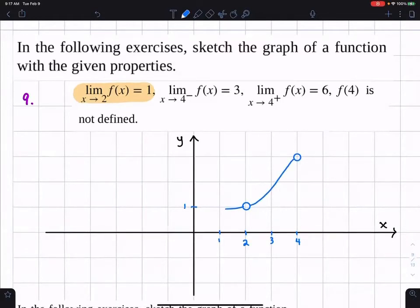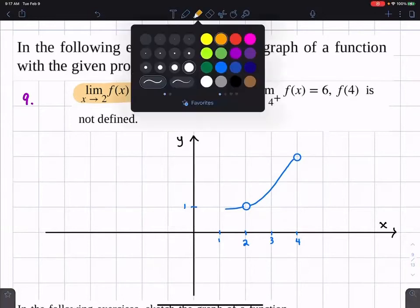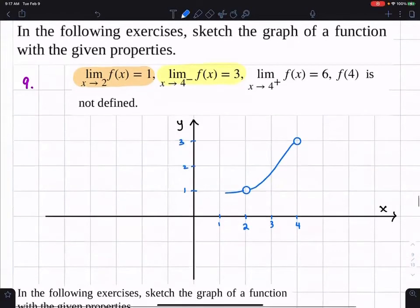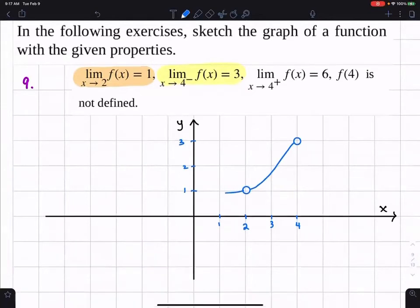And then from the right of 4, all right, so what I did is I just did this one right here. So I've done the first two. And then from the right of 4, the limit's 6.